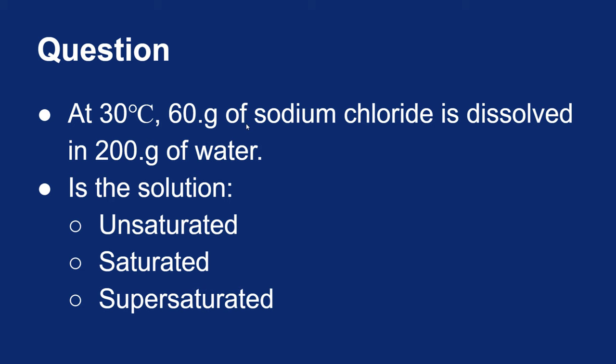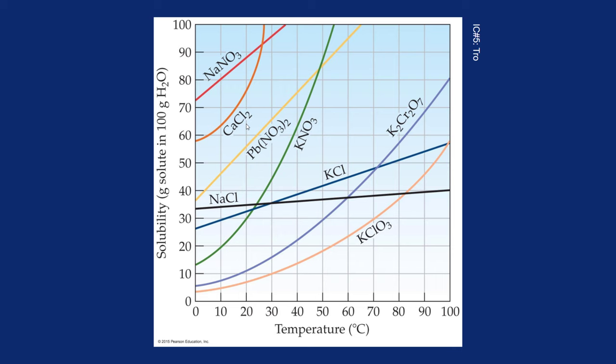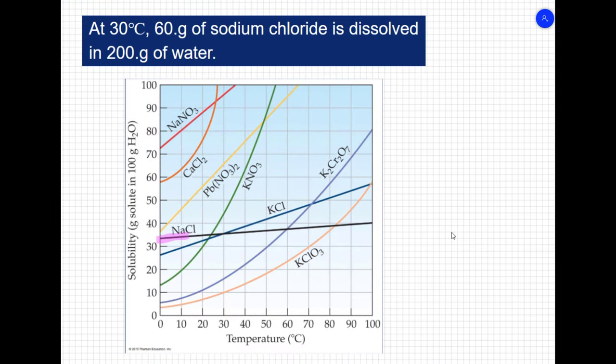Now to answer this question, we're going to need the solubility curve. So we're looking at this sodium chloride line right here. And we're looking at 30 degrees Celsius. So here's 30 degrees Celsius. So if I follow this line up here, 30 degrees Celsius is right about here.